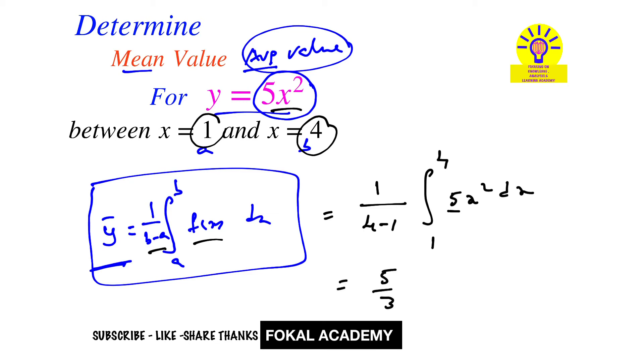Bring 5 outside, that becomes 5 by 3 integral of 1 to 4 x squared dx. That's equal to 5 by 3 into x cubed by 3, limits 1 to 4. So by simplifying this we will get 35. So this is the mean value or average value for the given function.